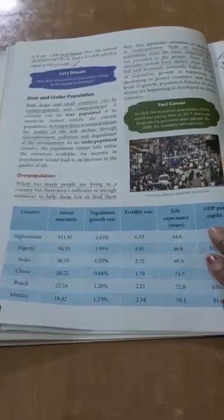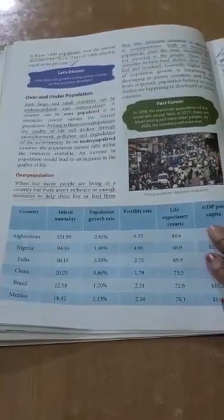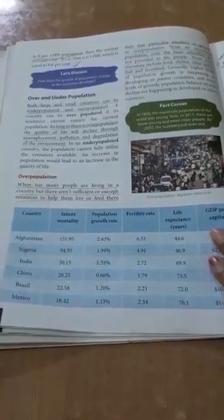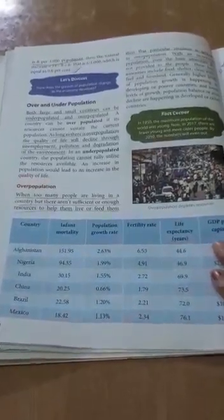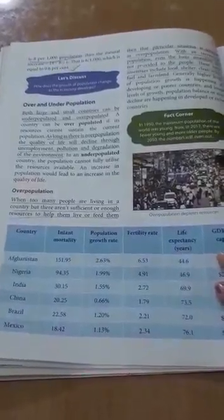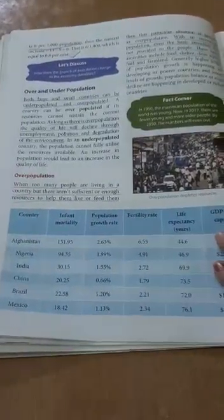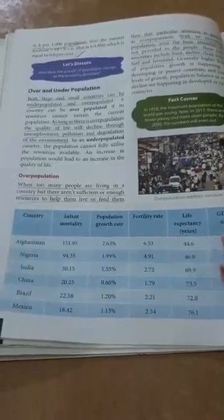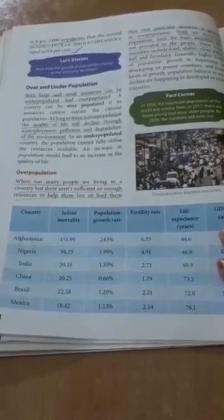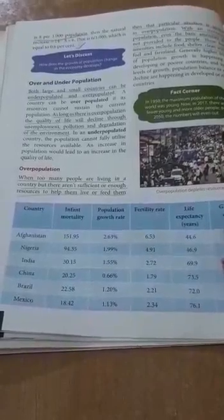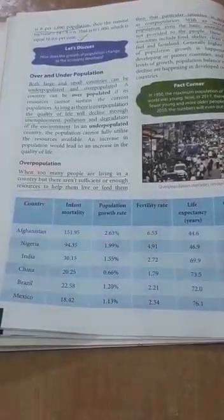Hello children. I am your geography teacher and today I will be explaining the second part of chapter 2, which includes overpopulation and underpopulation, the causes of overpopulation, and the consequences of overpopulation and underpopulation.